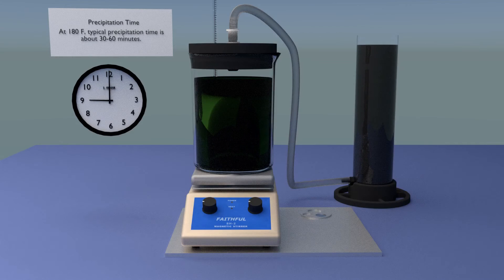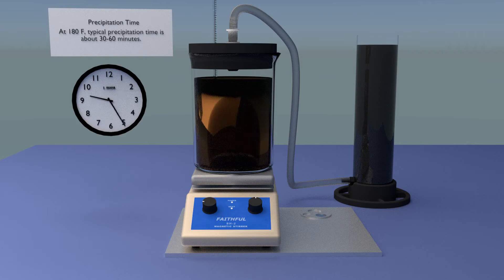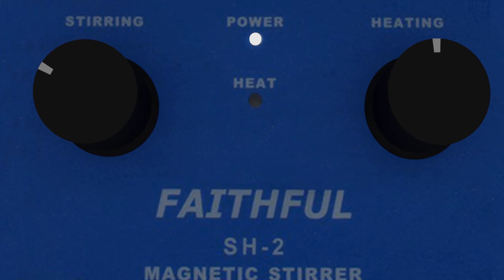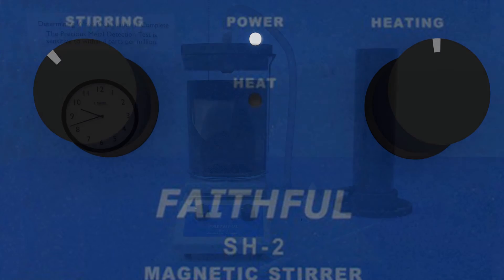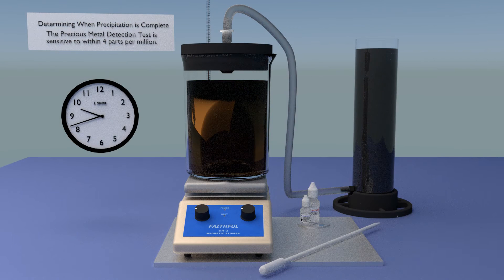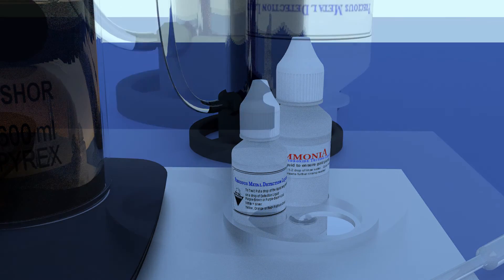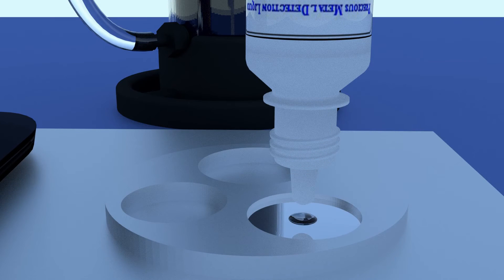Typical precipitation time for gold is 30 to 60 minutes at 180 degrees Fahrenheit. If you wish, you can employ the magnetic stirrer to speed precipitation. So how will we know when precipitation is finished? The precious metal detection test will tell us. This test is both highly effective as well as easy to run.